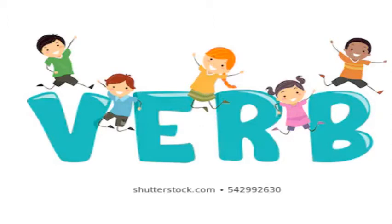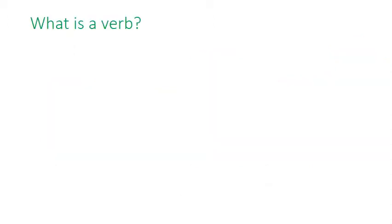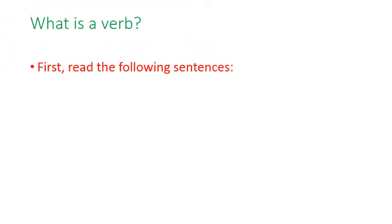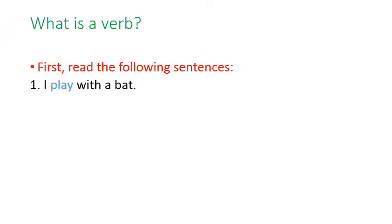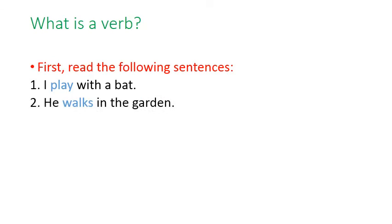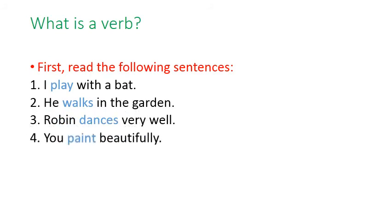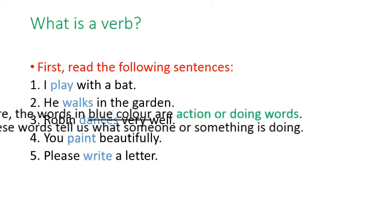Verb. Do you know what a verb is? I think you don't know what a verb is — today we will learn that. Before understanding this, let's look at the following sentences: I play with a bat. He walks in the garden. Robin dances very well. You paint beautifully. Please write a letter.